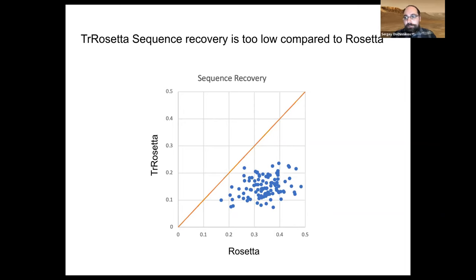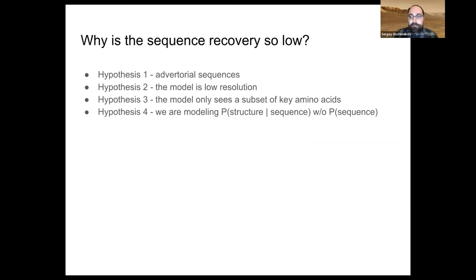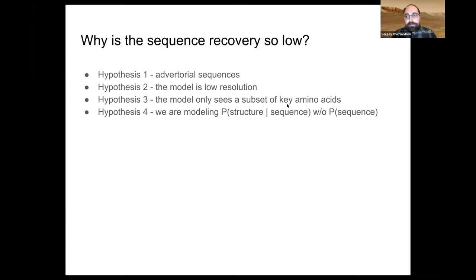Some hypotheses for why: maybe the sequences are adversarial; maybe the model is low resolution and can't distinguish side chains precisely; maybe the model only attends to a subset of the sequence when making predictions; or maybe we're modeling the probability of structure given sequence but haven't actually modeled the probability of the sequence itself — we try to account for this with an amino acid composition term, but maybe it needs to be more extensive.